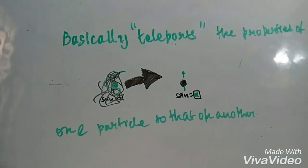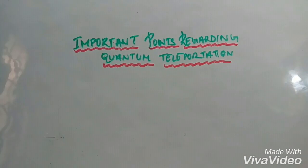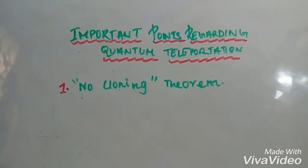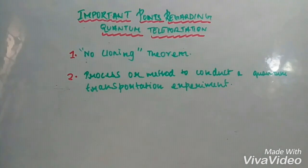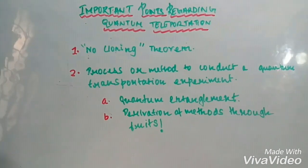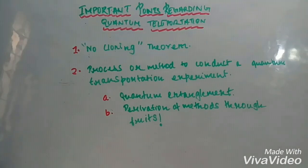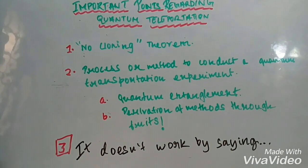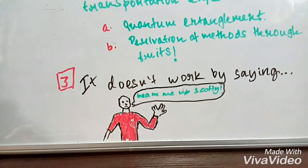Important points: number one, the no-cloning theorem; number two, the method to conduct this experiment, under which: (a) quantum entanglement, and (b) the derivation of these methods. And it doesn't work by saying 'Beam me up, Scotty!'